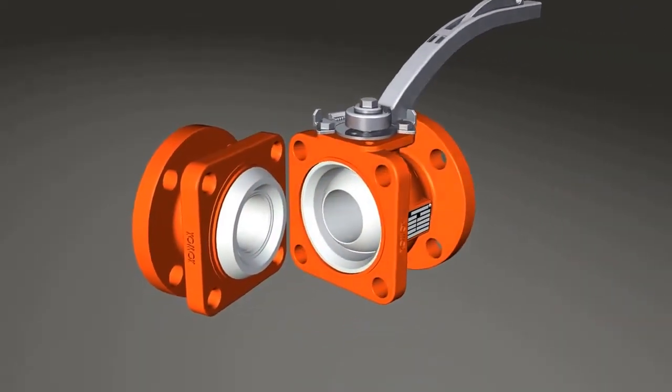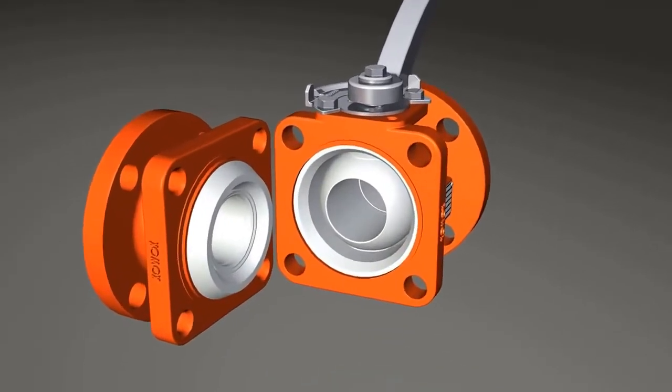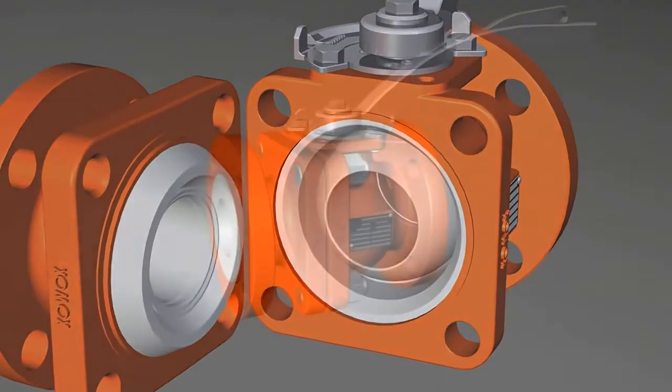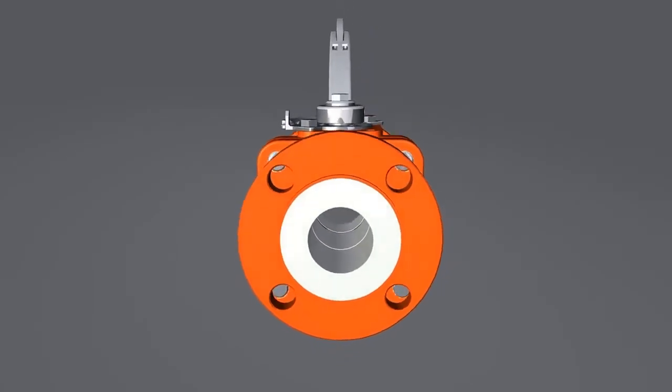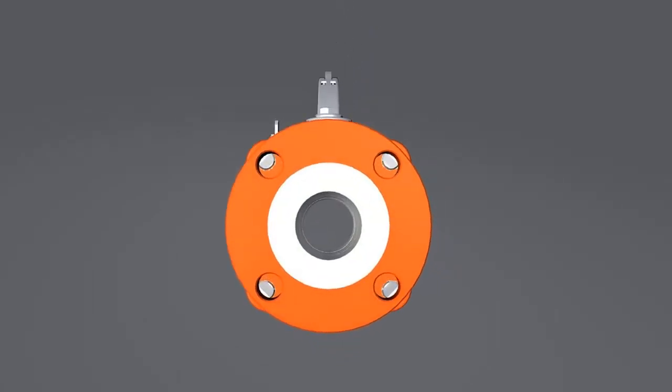Dynamic body joint design allows the valve to retain pressure boundary during thermal cycles. Lower torque translates into reduced actuation costs and space saving.